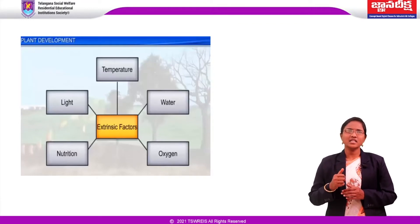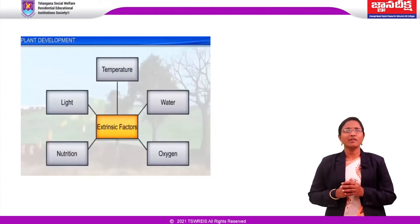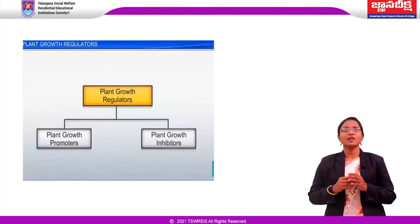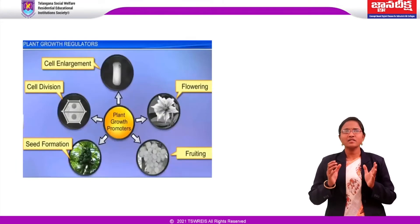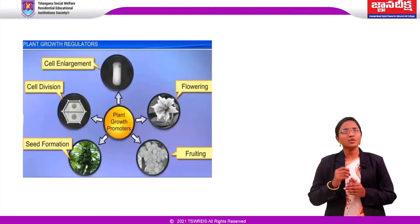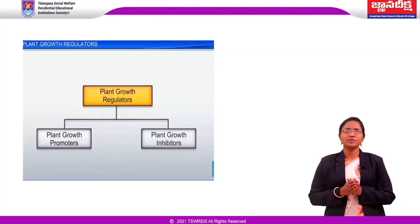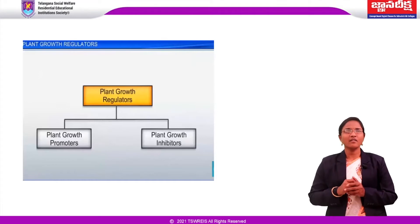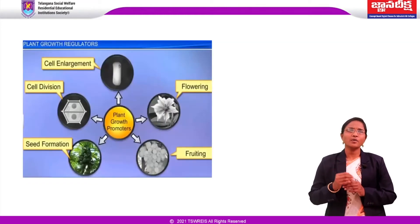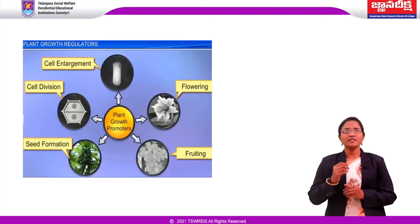Extrinsic factors include light, temperature, water, oxygen and nutrition. Plant growth regulators are small simple molecules of diverse chemical composition. They are variously described as plant growth substances, plant hormones, or phytohormones. These plant growth regulators can be broadly divided into two groups based on their function: plant growth promoters and plant growth inhibitors. The first group is involved in growth-promoting activities such as cell division, cell enlargement, tropic growth, flowering, fruiting and seed formation.